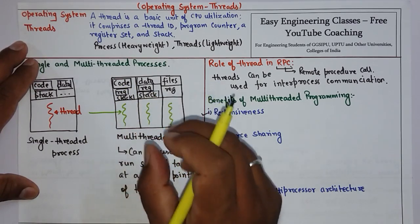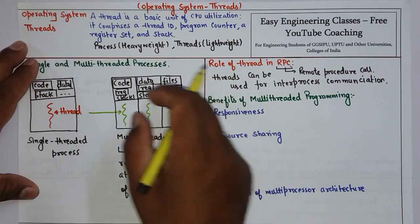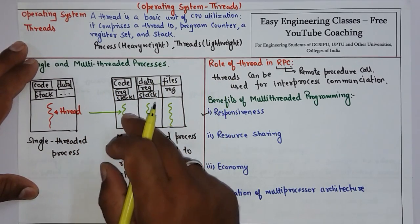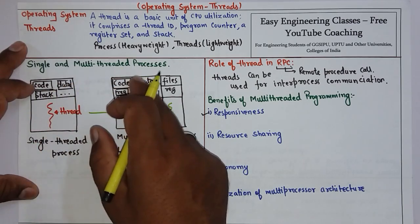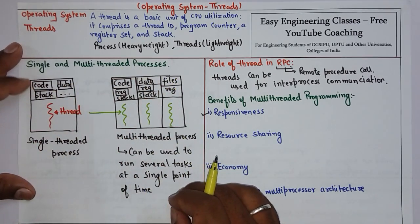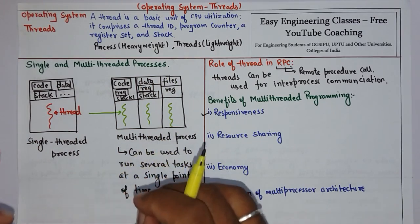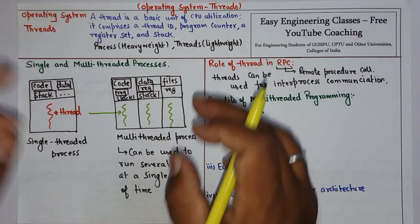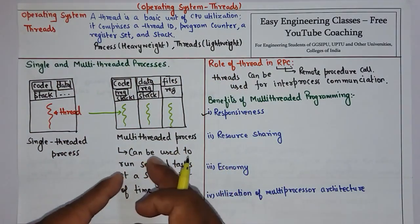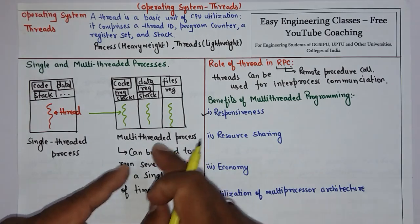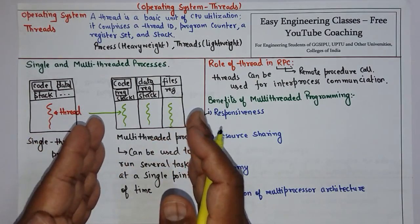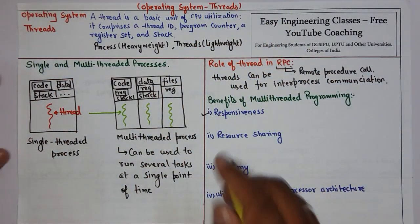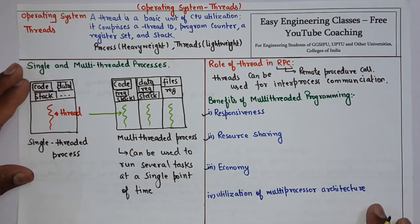The second benefit is resource sharing. Threads share the memory and resources of the process — whatever memory the process has is shared by the threads, and resources are also shared by the threads. The benefit of sharing code and data is that it allows an application to have several different threads of activity within the same address space, making inter-thread communication cheap.